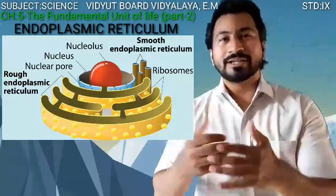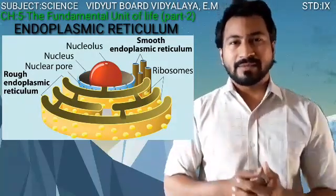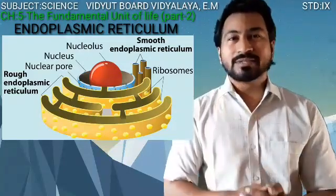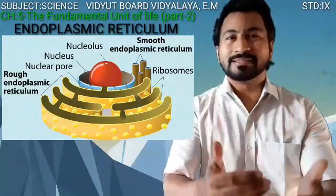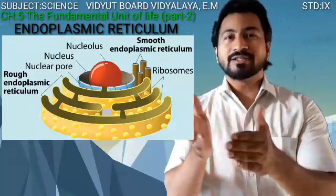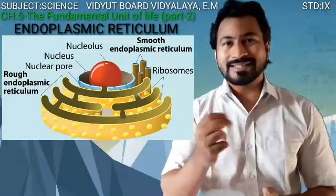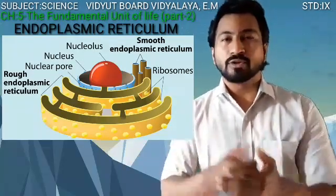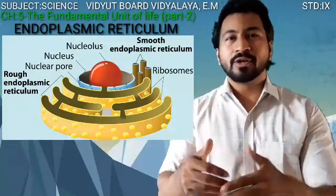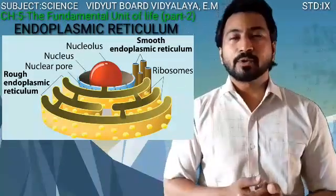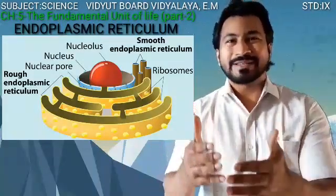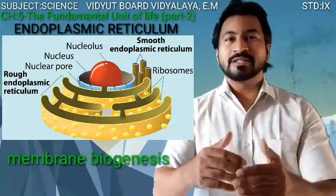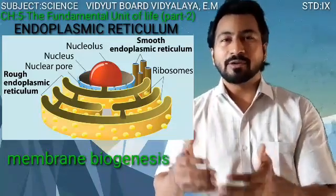Since rough endoplasmic reticulum has ribosomes, one of its major functions is protein synthesis. Smooth endoplasmic reticulum, having no ribosomes, performs the function of storage and helps in the formation of various membranes, specifically the plasma membrane. This process is known as membrane biogenesis — 'genesis' meaning to prepare.